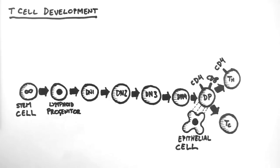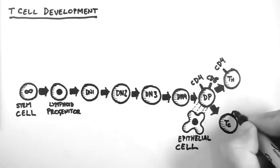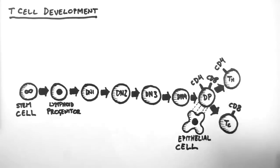Conversely, the cells which become cytotoxic T cells stop expressing CD4 and continue expressing CD8. So they become CD8 positive and CD4 negative. Because these cells only express either the CD4 or the CD8, they are called single positive cells.